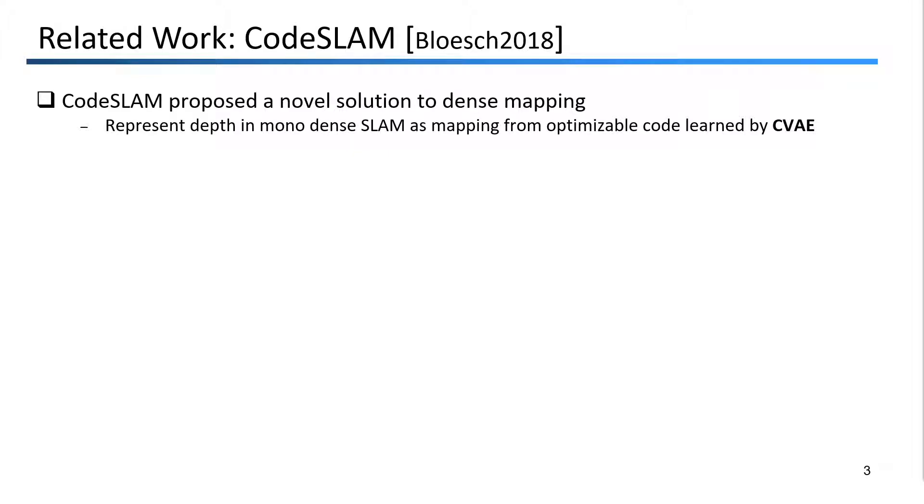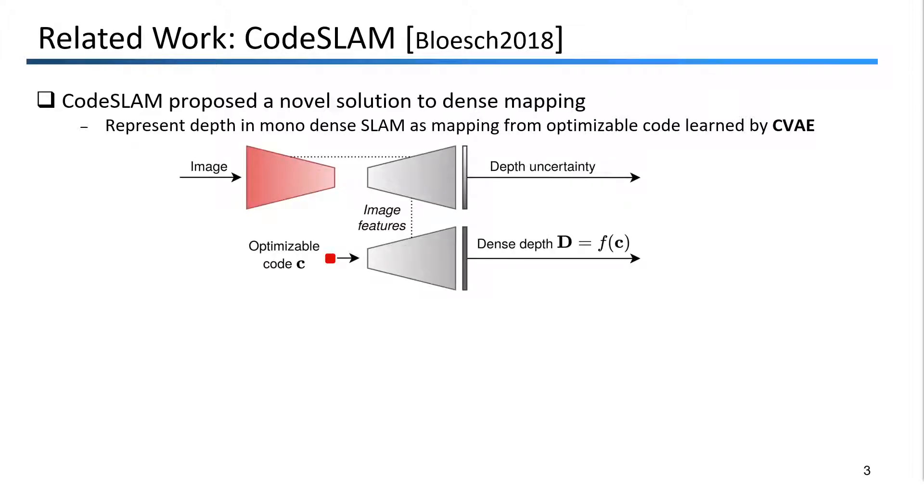CodeSLAM introduced this idea as a solution to dense mapping. The idea is to represent the depth maps in dense monocular SLAM as a mapping from a compact optimizable code, which is learned by a Conditional Variational Autoencoder, or CVAE. This figure shows the CVAE as a neural network with two input streams. On the top, images are fed into a UNET-style network, which provides learned multiscale features and predicts the depth uncertainty. On the bottom, a decoder network predicts dense depth from the optimizable code, and is conditioned on the image features.